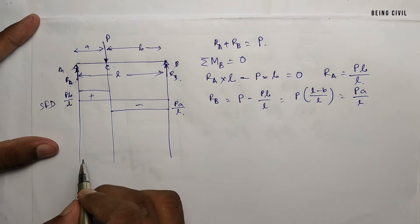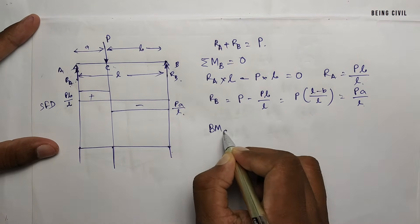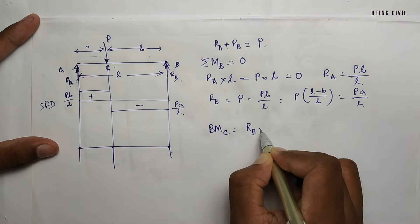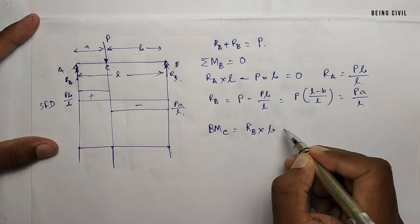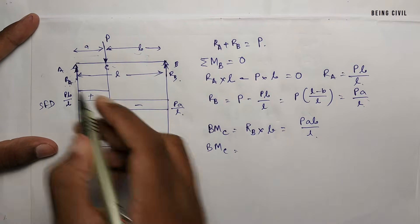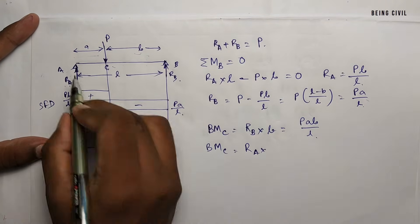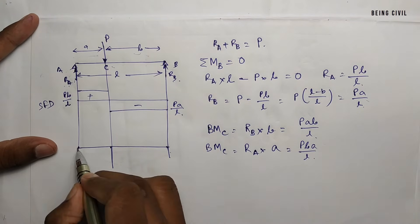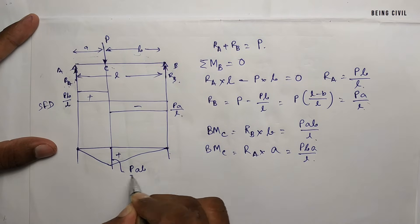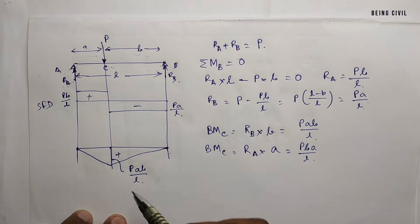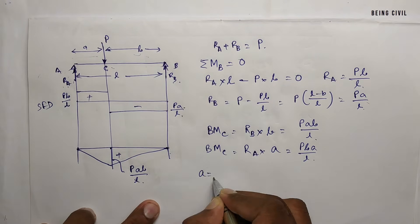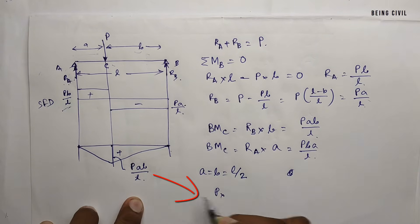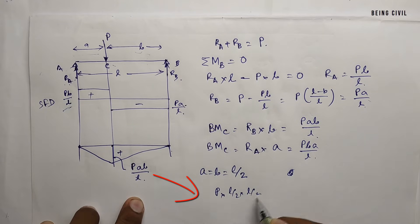Now coming to the bending moment. The bending moment at C will be either RA into distance A or RB into distance B. Taking RB into distance B gives the same result as taking RA. So the bending moment at C equals PAB by L. In these equations, if you substitute A equals B equal to L by 2, you get the same result as before: P into L by 2 into L by 2 divided by L, which gives PL by 4.